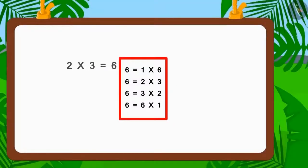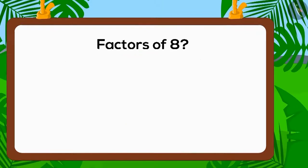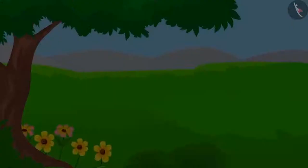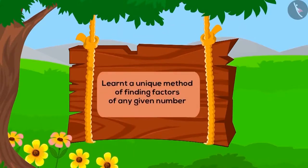So, you see, by finding all the factors of six, we help the villagers. Children, we can find the factors of any number by using the multiplication table. Now, why don't you try to play this game of finding factors of number eight with your friends? So, children, in this lesson, we learned a unique method of finding factors of any number. In the next chapter, we will learn different ways to use these factors.